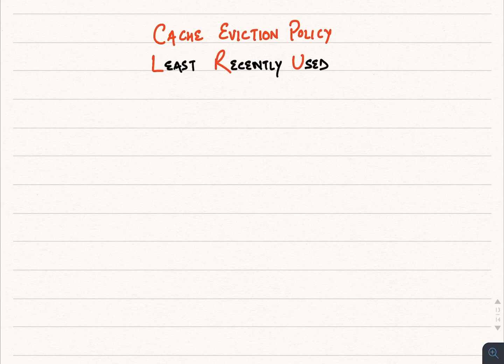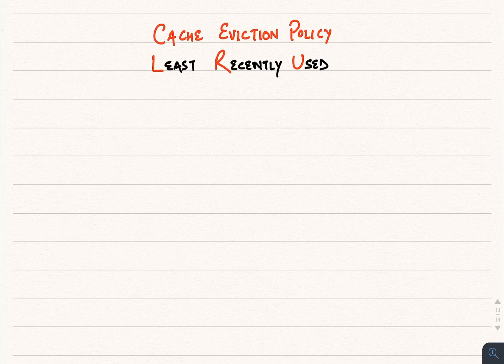Let's talk about the cache eviction policy. You would have heard about one of the important cache eviction policies, which is the Least Recently Used (LRU) cache eviction policy. Let's start by understanding why this exists. As cache sits closest to the CPU, accessing data is very fast. But there is a limitation on the quantity of data that can be stored in cache.